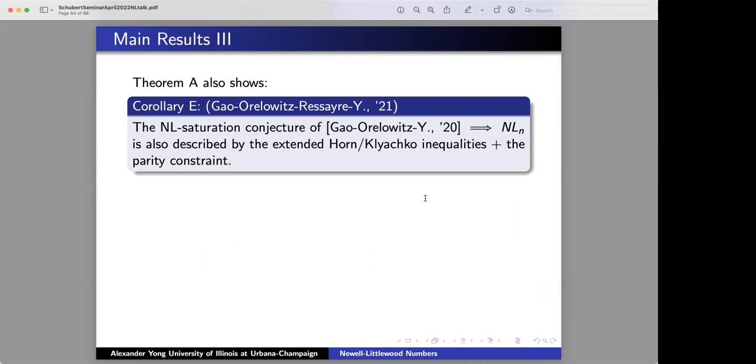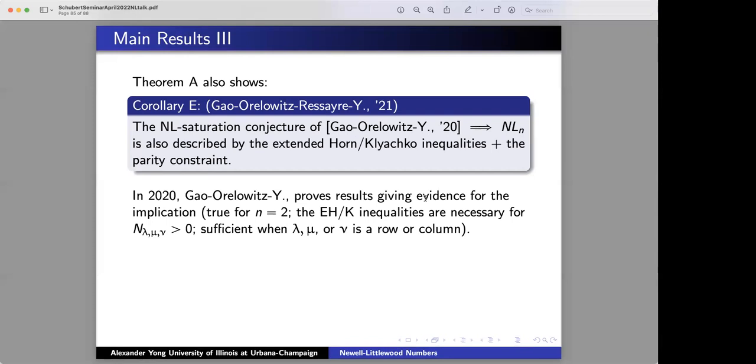So is that all there is to do? Well, no. In fact, where we are right now is we are essentially in the condition of Knutson and Tao in the late 90s. Once we know theorem A, it now follows that the saturation conjecture that we had for NL would imply that the NL itself, not just NL-SAT, is described by these Horn and Klyachko inequalities. But we don't know yet how to prove what would seemingly be just a combinatorial question. What is some evidence for the saturation conjecture?